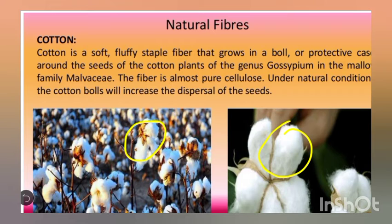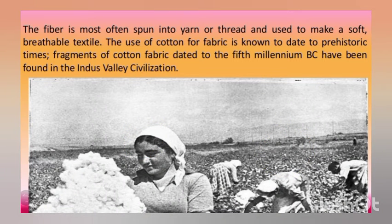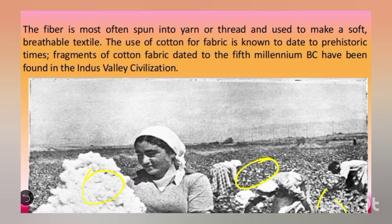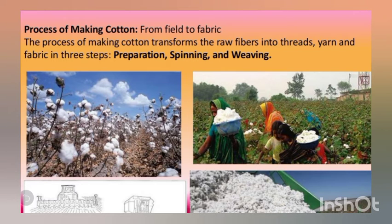From cotton we obtain cotton fabrics through several steps. The first process is picking — you can see them picking up the cotton balls. This method is called hand picking, and nowadays it is also done by machines. After picking, the processes involved are ginning, spinning, and weaving.